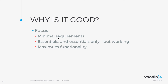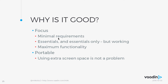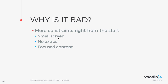Why is progressive enhancement good? You start focusing on a very small scale — minimal requirements, essentials only, and maximum functionality. It's going to be used on a mobile phone, so it has to be simple and functioning. Portability of that solution is also good — it's not a problem if you have too much screen space and just add extras. Why is it bad? Because everything comes at a price. The biggest drawback is that you have challenges and constraints right from the start. You can't put everything on a screen and hope that people will still see it — there is more work on the planning stage already.